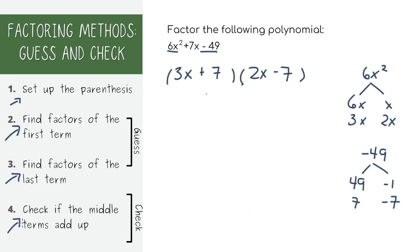Now let's do the check part in guess and check. Basically, you're doing a part of foiling to see if your middle term comes out correctly. To get the x term, let's do the outside and multiply 3x times negative 7, and inside, so 7 times 2x. When you add negative 21x and 14x, it equals negative 7x, which is not the positive 7x we're looking for. So we'll have to guess again, then check it until it works out.